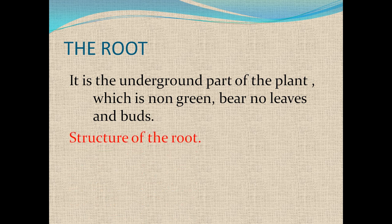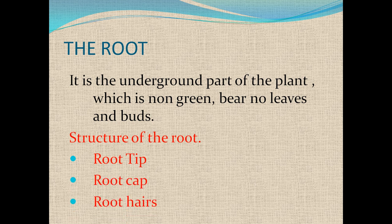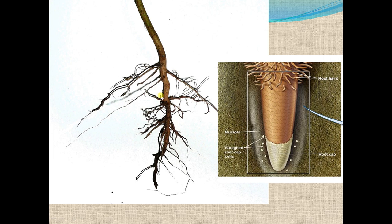Structure of root: a root has three main parts — root tip, root cap, and root hairs. You can see here in this diagram, this is a root, and if we take an enlarged image of this area, so this is that enlarged image. These are the root hairs.